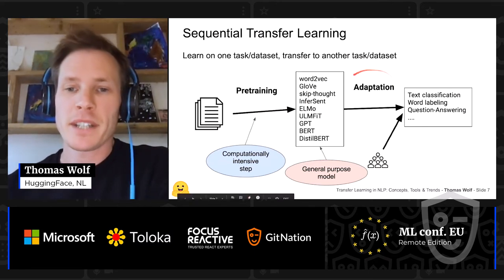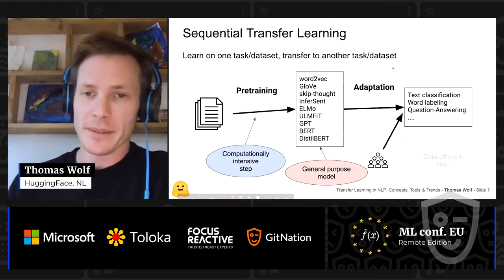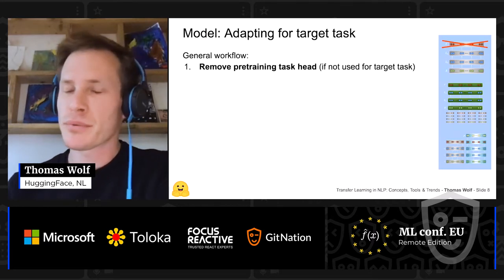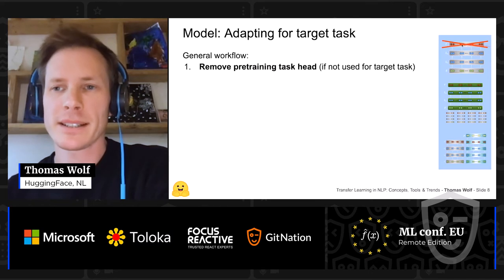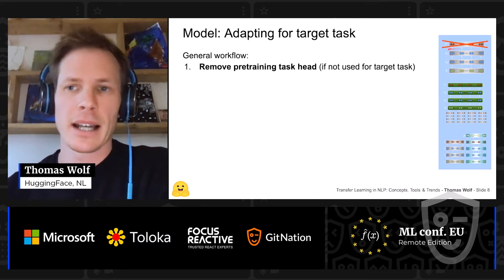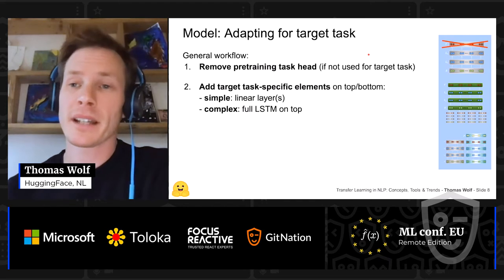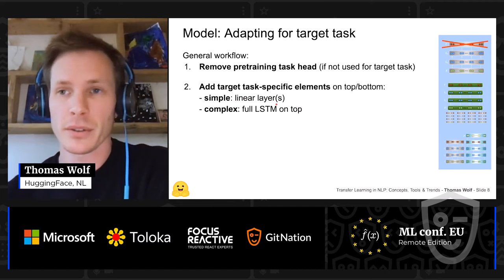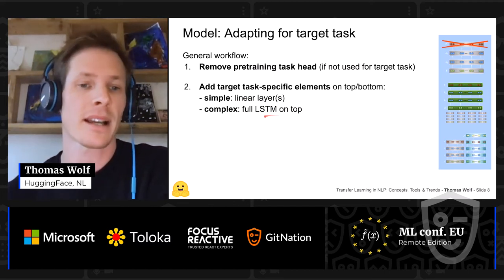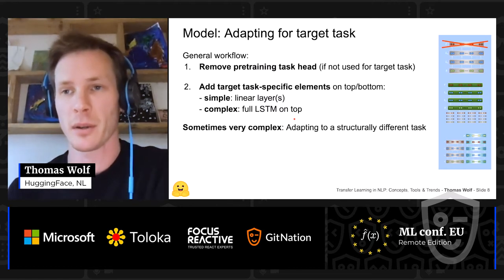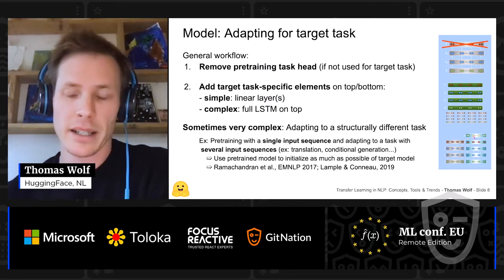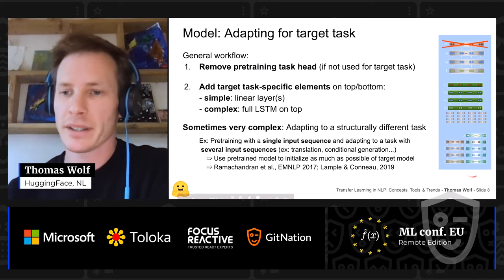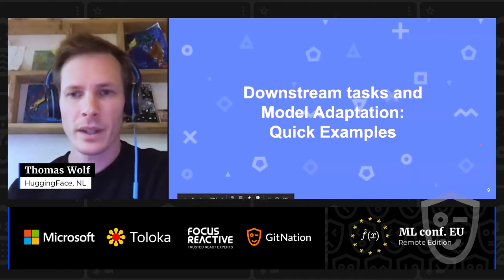Now, for the adaptation step: first, we remove the pre-training head — those pink boxes from the previous slides — and replace them with a task-specific head. For text classification it can just be a linear projection to the number of classes. For more complex tasks you can add a full neural network on top. For structurally very different tasks like machine translation, you need to do more complex things.